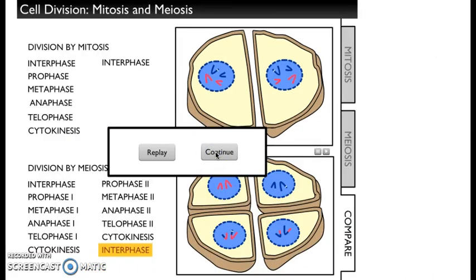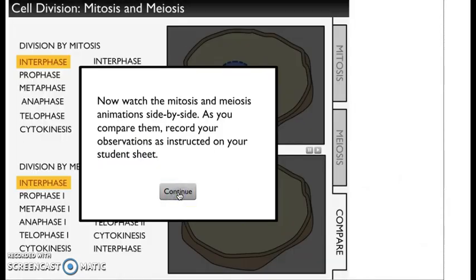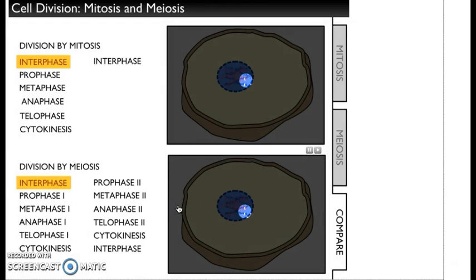Now we're going to look at the difference between mitosis and meiosis and compare. We'll find cells that divide by meiosis only in the reproductive system. We're going to do a side-by-side comparison and look at one gene highlighted in yellow on one of the blue chromosomes. As the phases change, the gene will be shown with a spotlight. Track what happens to that yellow gene after a cell undergoes mitosis and after a cell undergoes meiosis.